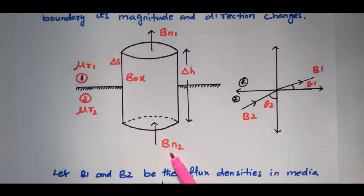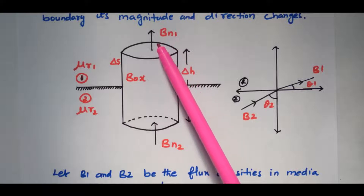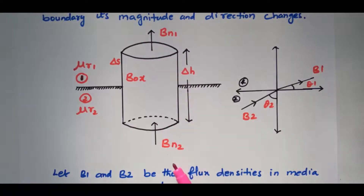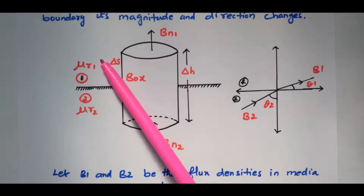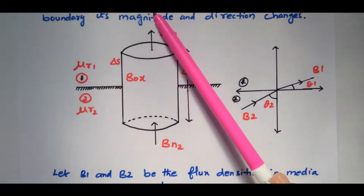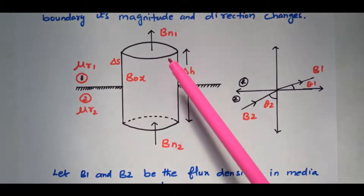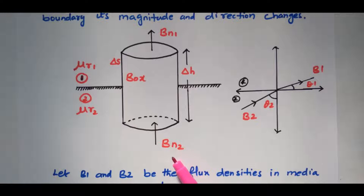We are going to analyze the normal component of the flux density vector. BN2 is the normal component of flux density vector entering the box, and BN1 is the normal component of flux density vector leaving the box. The flux density vector enters in the second magnetic material and leaves in the first magnetic material. We are going to analyze whether both are equal, or if there is any deviation in the normal component of flux density vector.